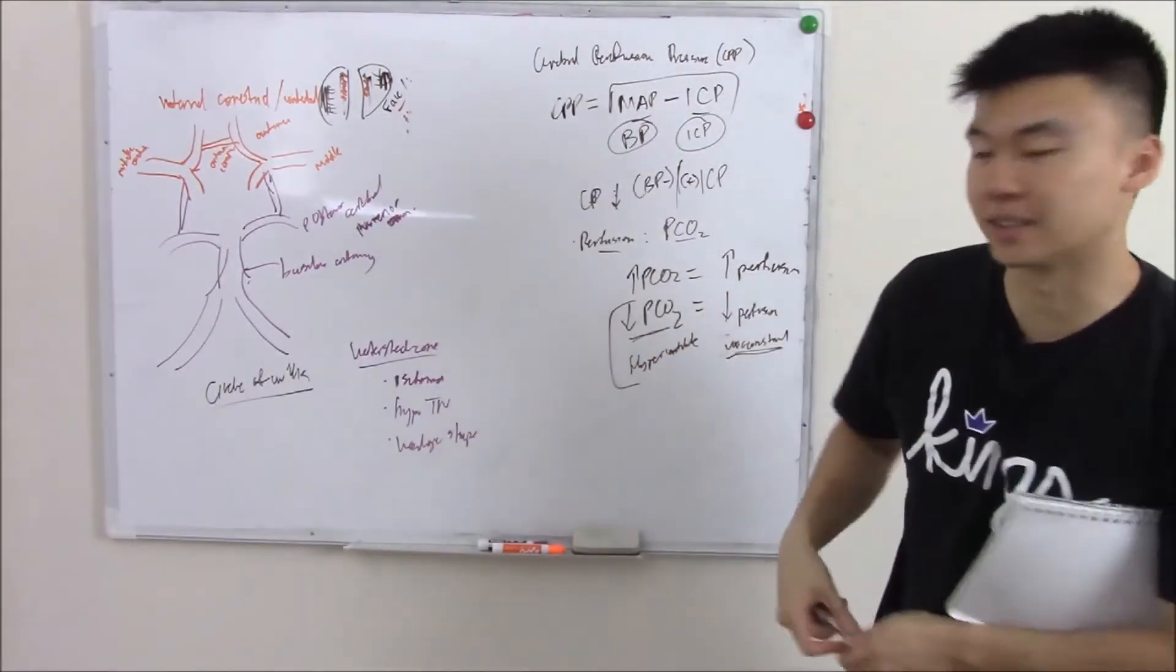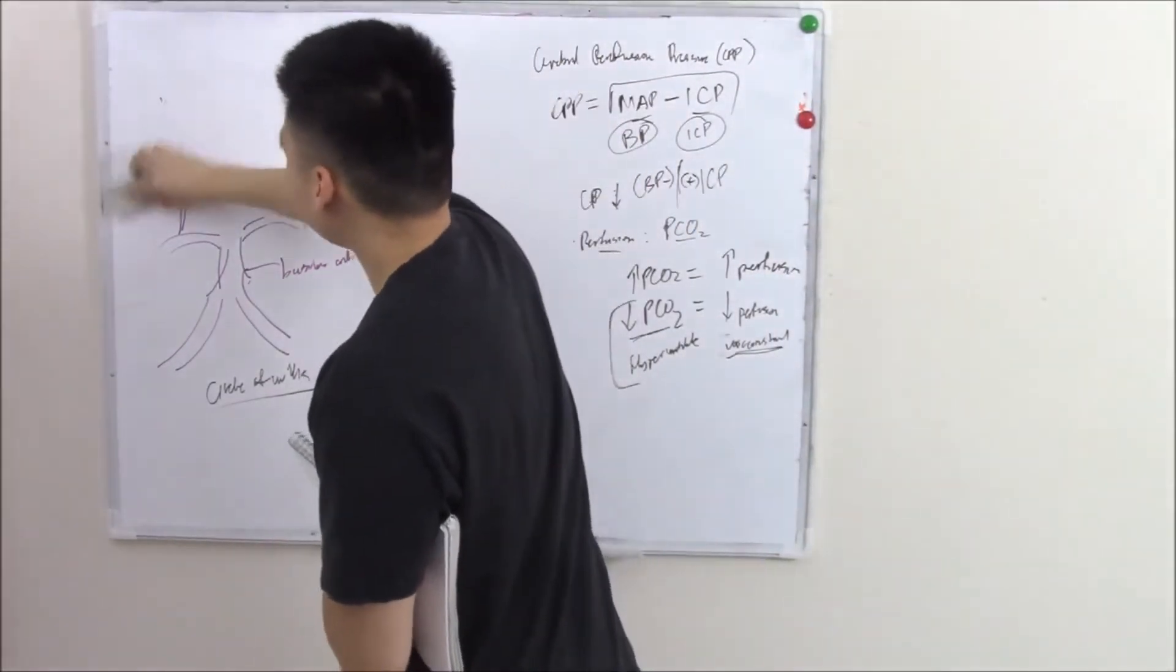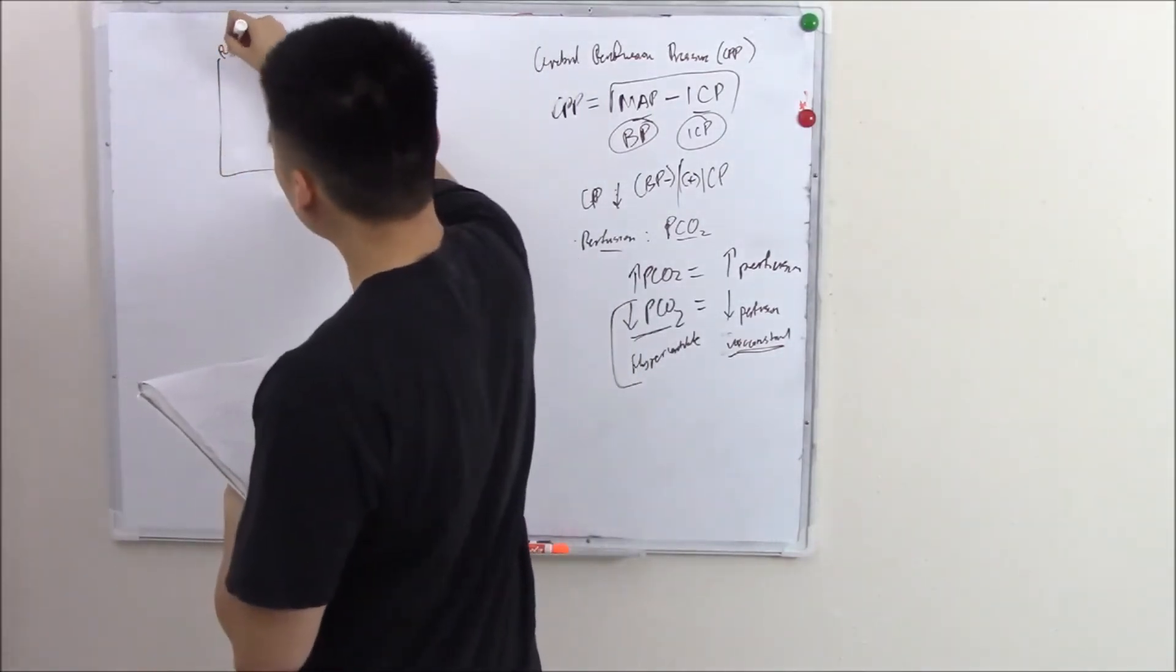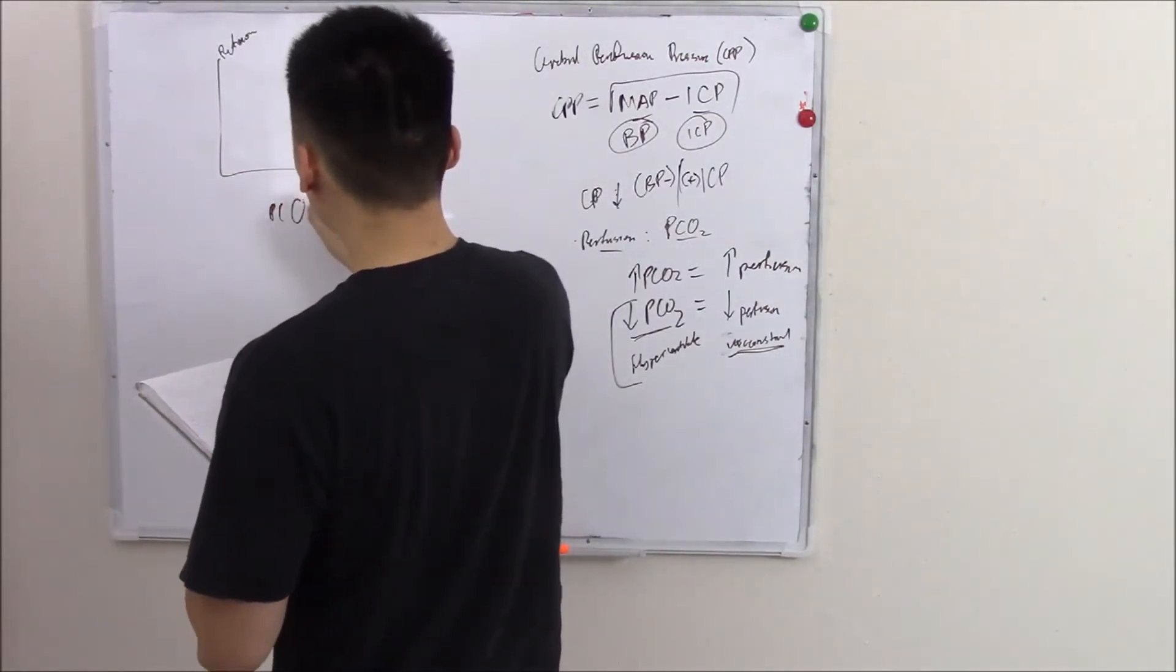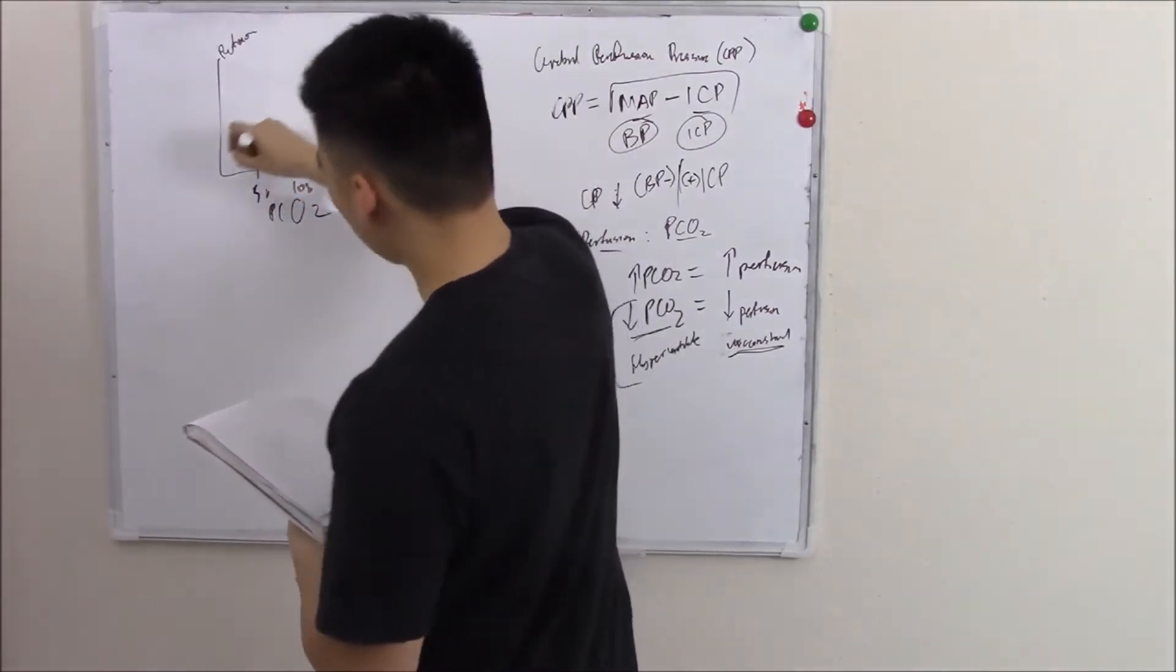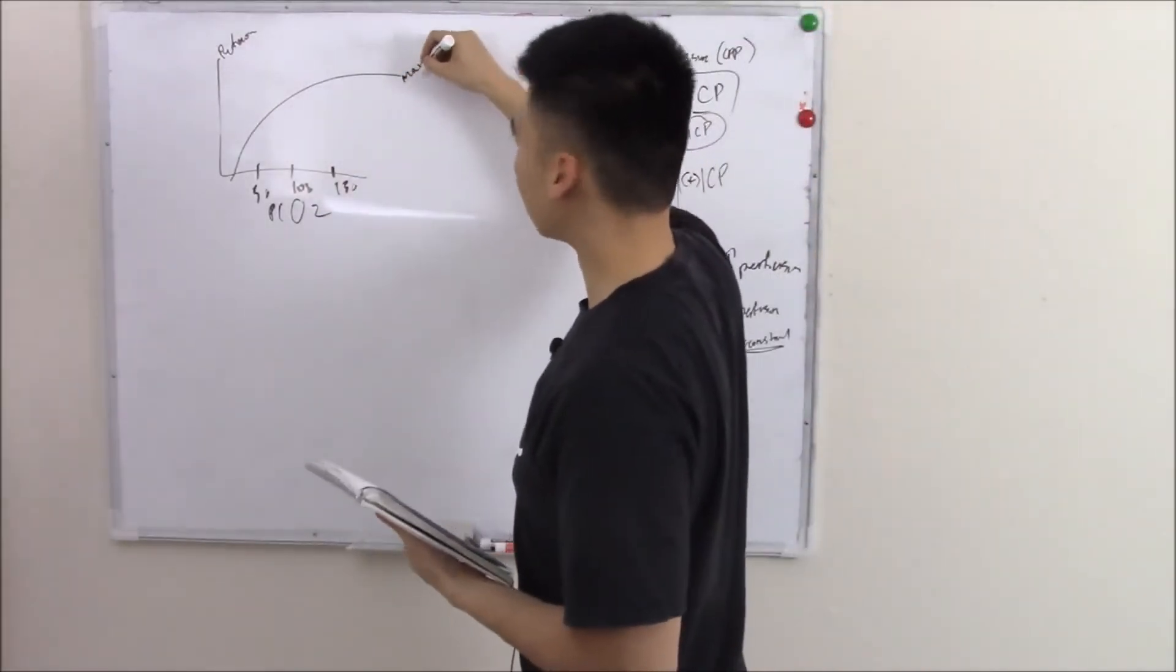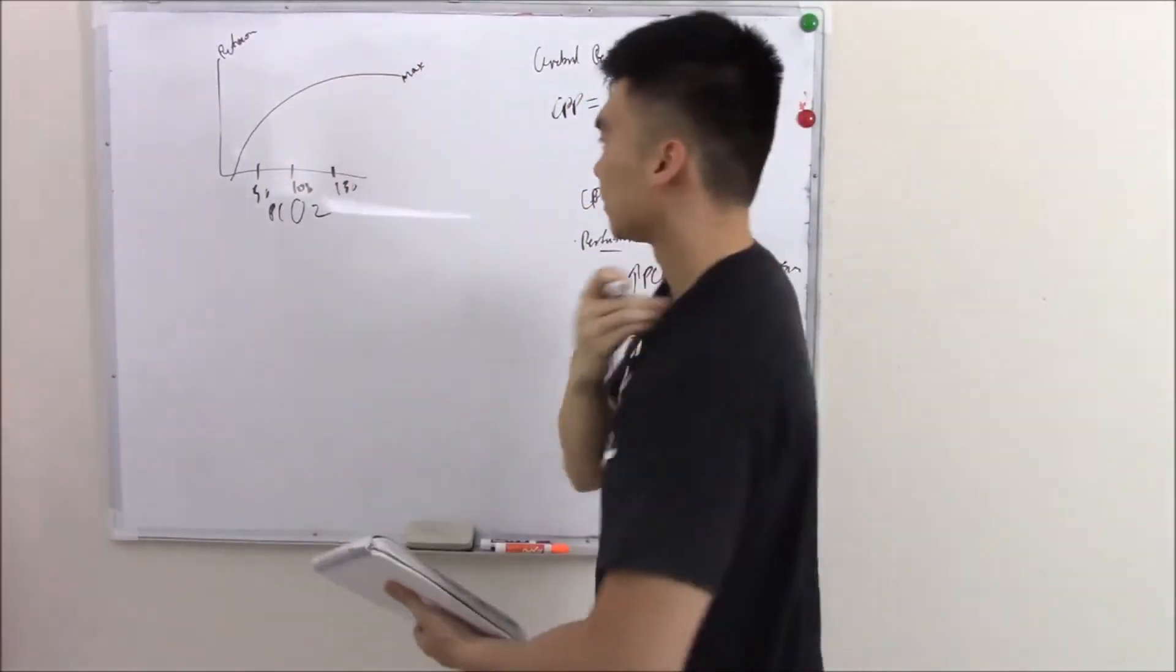And lastly, because anytime we do physio, they like to pull out charts, and charts always suck. It always scares medical students, but it's not that bad. There are two charts they'd like to show. One of them is your perfusion versus your CO2 levels. So as your CO2 levels rise, your perfusion will rise. That just makes sense. That's what we've been talking about this last couple minutes. Until it hits a certain point where it just basically maxes out. So as your CO2 levels rise, your perfusion will rise. That chart's not too bad. So that's your first chart.